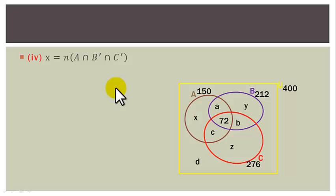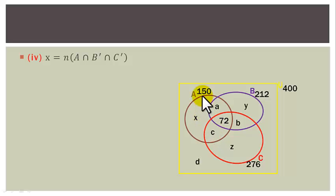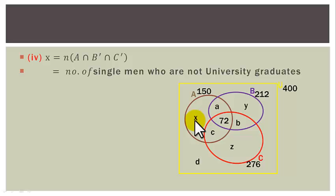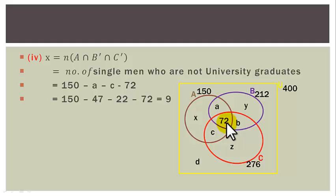Question 4: X is the number in A but not B and not C — single men who are not university graduates. X = 150 − A − C − 72 = 150 − 47 − 22 − 72 = 9.